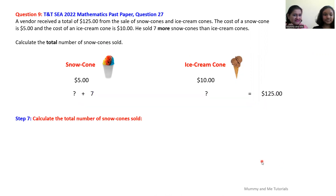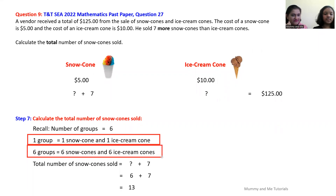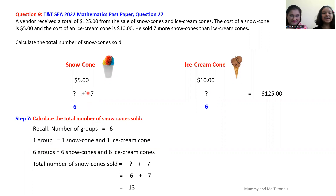Six groups means the vendor sold six snow cones and six ice cream cones. We were required to find the total number of snow cones sold. We know six ice cream cones and six snow cones were sold, but an additional seven snow cones were sold than ice cream cones. Hence, the total number of snow cones sold is six plus seven, which equals 13 snow cones.